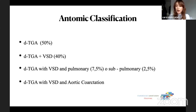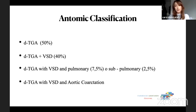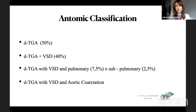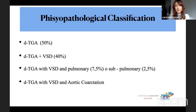Anatomically, fifty percent of dTGA cases are simple, with no other congenital heart disease associated. In forty percent of cases it is associated with a VSD, and in fewer cases it is associated with a VSD and pulmonary obstruction — which can be at the valvular or subvalvular level. Some cases are also associated with aortic coarctation.